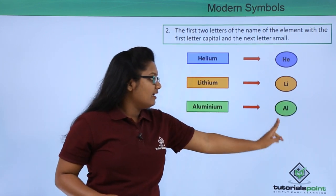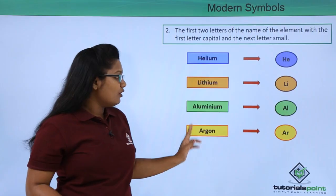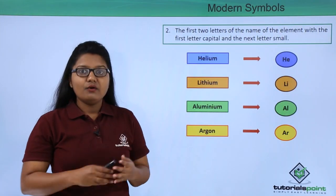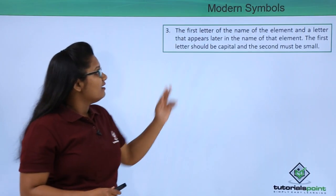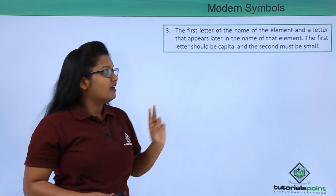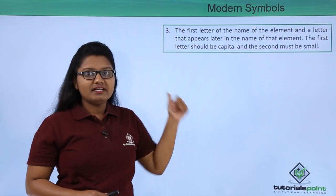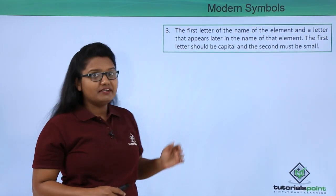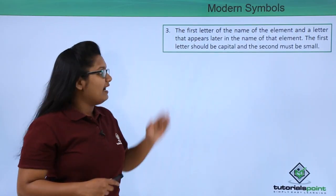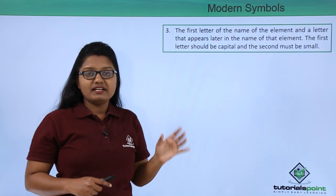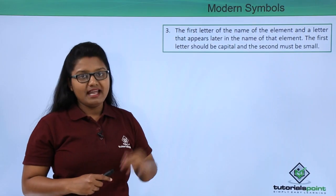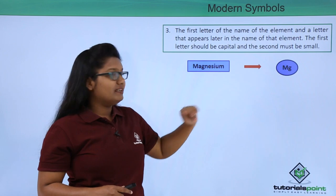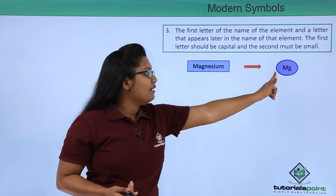Aluminum is represented by Al and argon by Ar. Another set of elements are represented by two letters where the first is the first letter of the name, but the second is a letter that appears later in the name. The first letter is capital and the second is small. For example, magnesium is written as Mg, where M is the first letter and g is the third letter of magnesium.